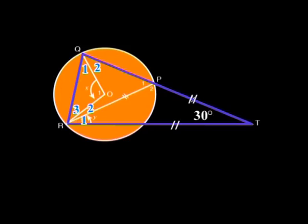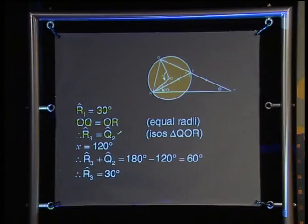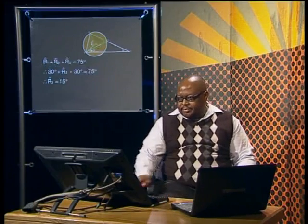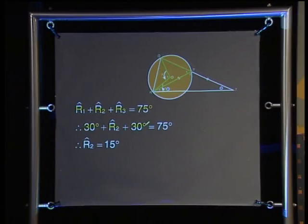We are trying to find R2 on its own. We know R1 is 30 degrees. What about R3? It is a base angle of triangle QOR, and this triangle is isosceles because radii OQ and OR are equal, so Q2 and R3 are also equal. X is 120 degrees, so Q2 plus R3 must be 60 degrees, and R3 is half of this — 30 degrees. Now the sum: 75 degrees at R equals 30 plus R2 plus 30, so R2 must be 15 degrees.